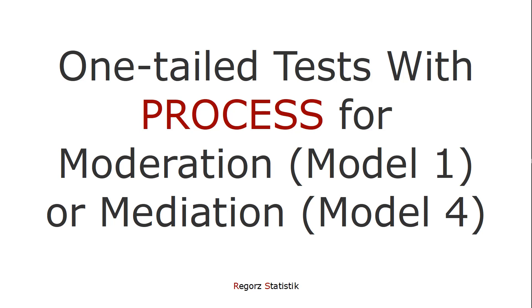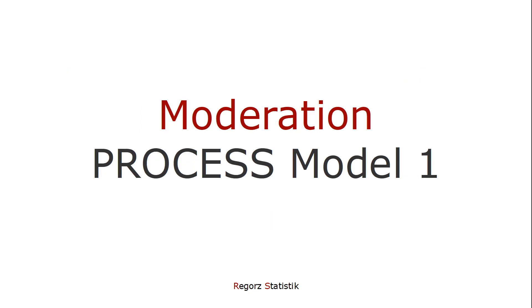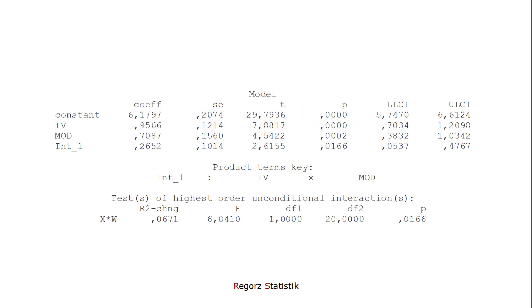So how can you do this in PROCESS? Let's start with moderation, process model 1. Here are the key parts of the output. Here is the p-value, which by default is the p-value of a two-tailed test.